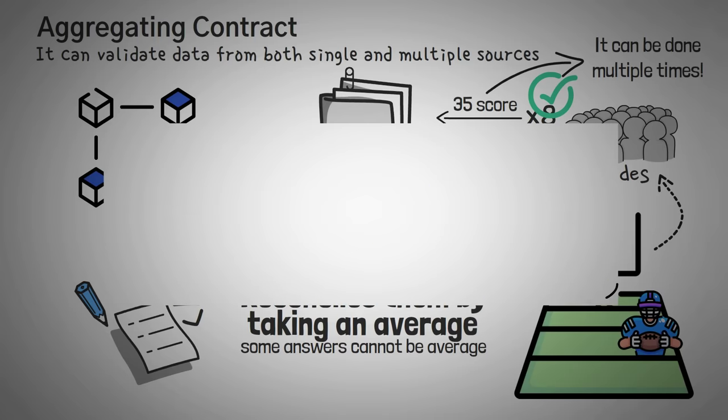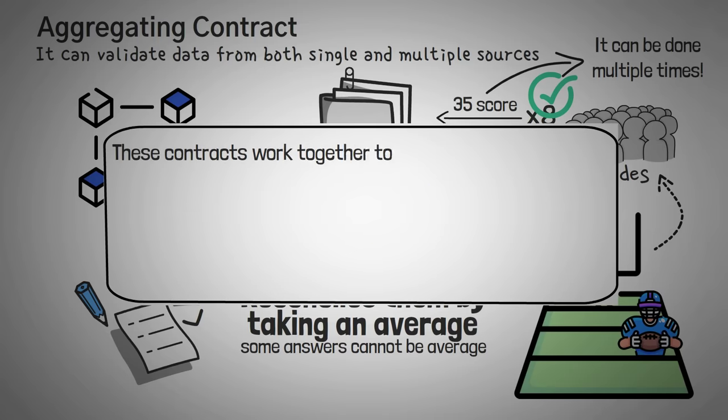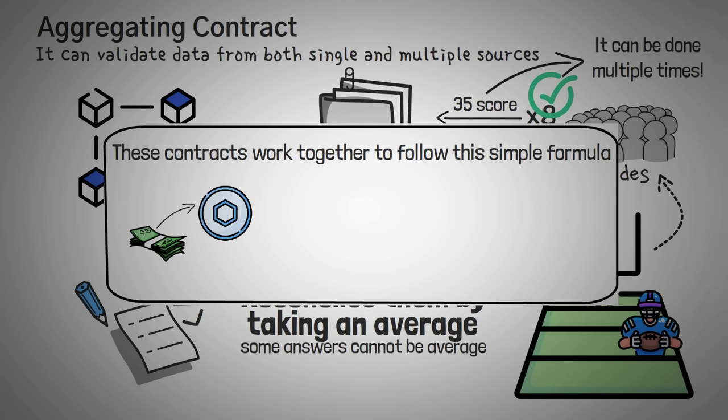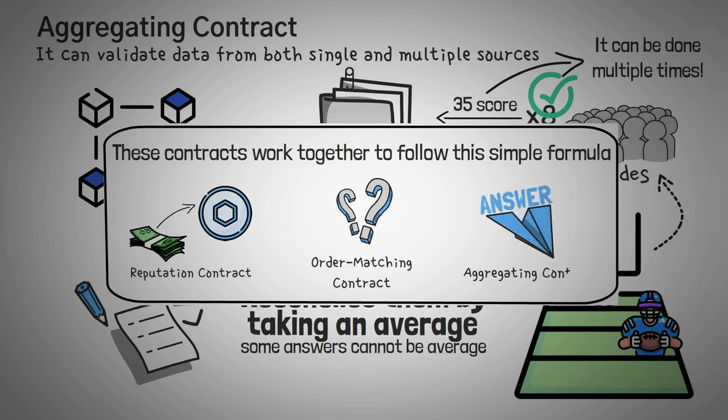To sum it up in a whiteboard crypto manner, basically all of these contracts work together to follow this simple formula. You pay Chainlink to go find some trustable nodes, which is the reputation contract. Then you give them a question that hopefully they can find the answer to, and this is the order matching contract. Finally, you let Chainlink aggregate all the data into a single answer, which is the aggregating contract. This is a good overview of how Chainlink actually works.